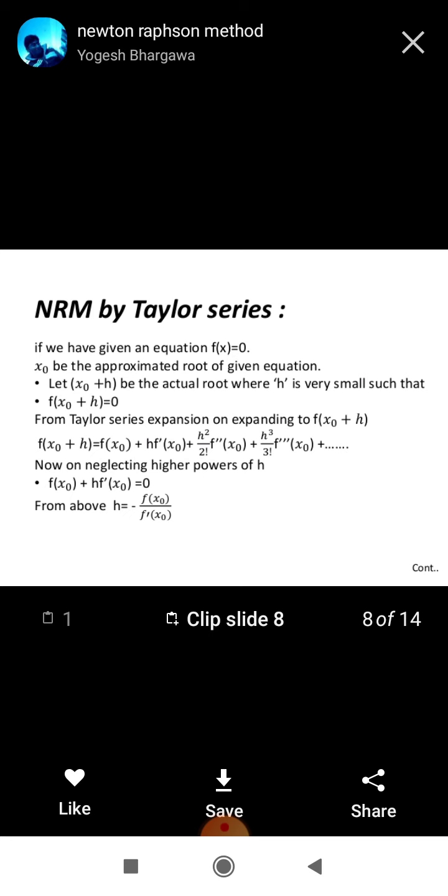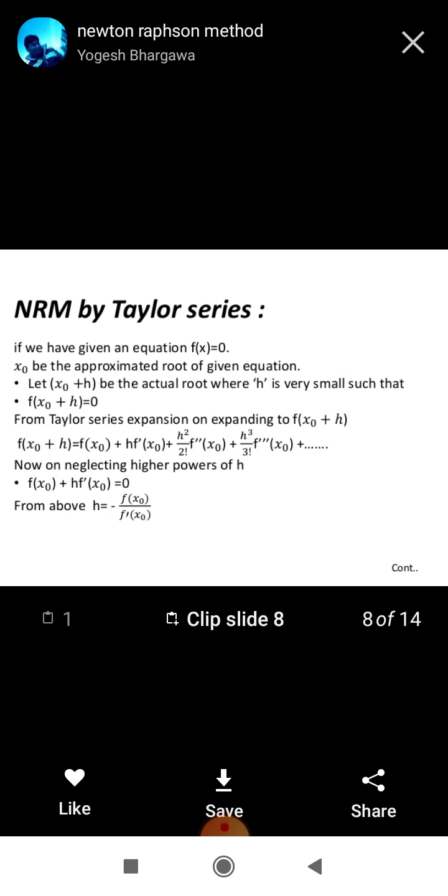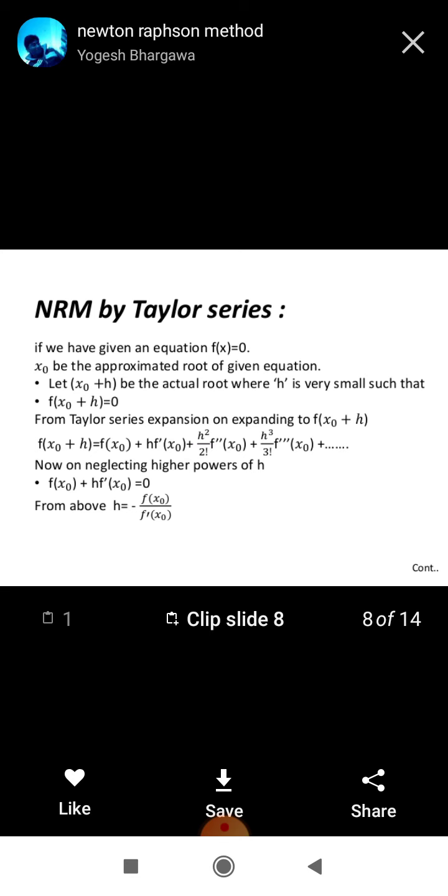So, expanding with the help of Taylor series, this is the expansion of Taylor series. f of x0 plus h equals fx0 plus h f prime x0 plus h square upon factorial 2 f double prime x0 plus h cube upon factorial 3 f triple prime x0 dot dot dot and similar.